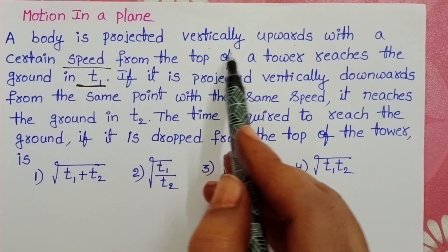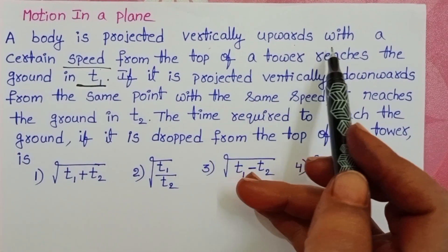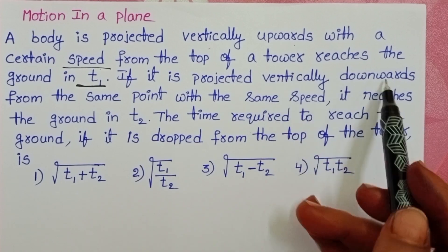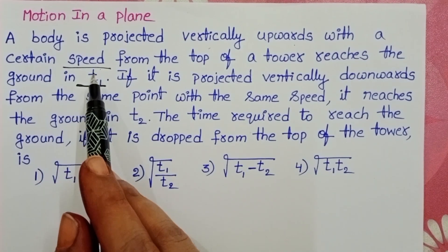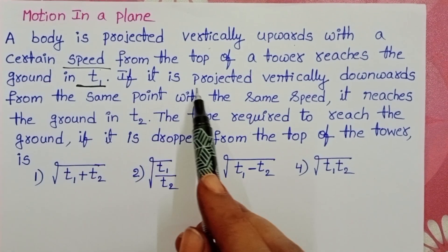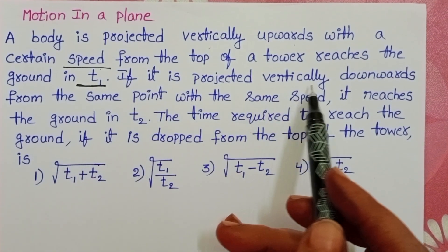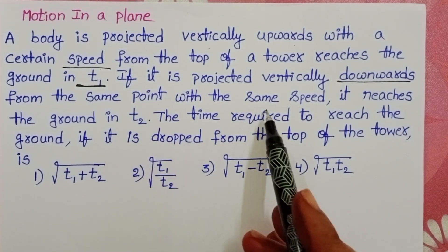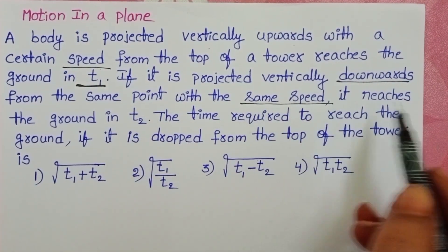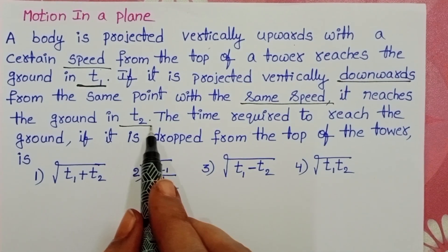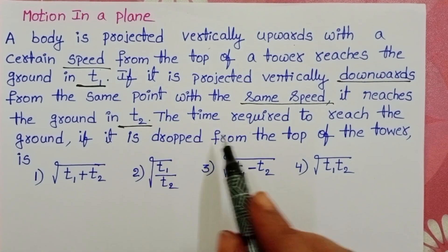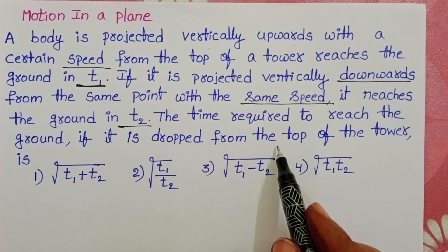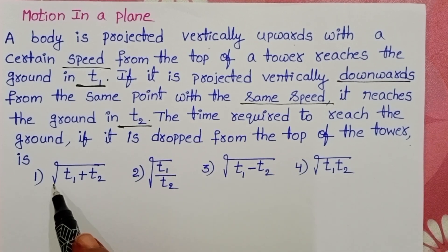A body is projected vertically upwards with a certain speed from the top of a tower and reaches the ground in T1 seconds. If it is projected vertically downwards from the same point with the same speed, it reaches the ground in T2 seconds. The time required to reach the ground if it is dropped from the top of the tower is what we need to find.